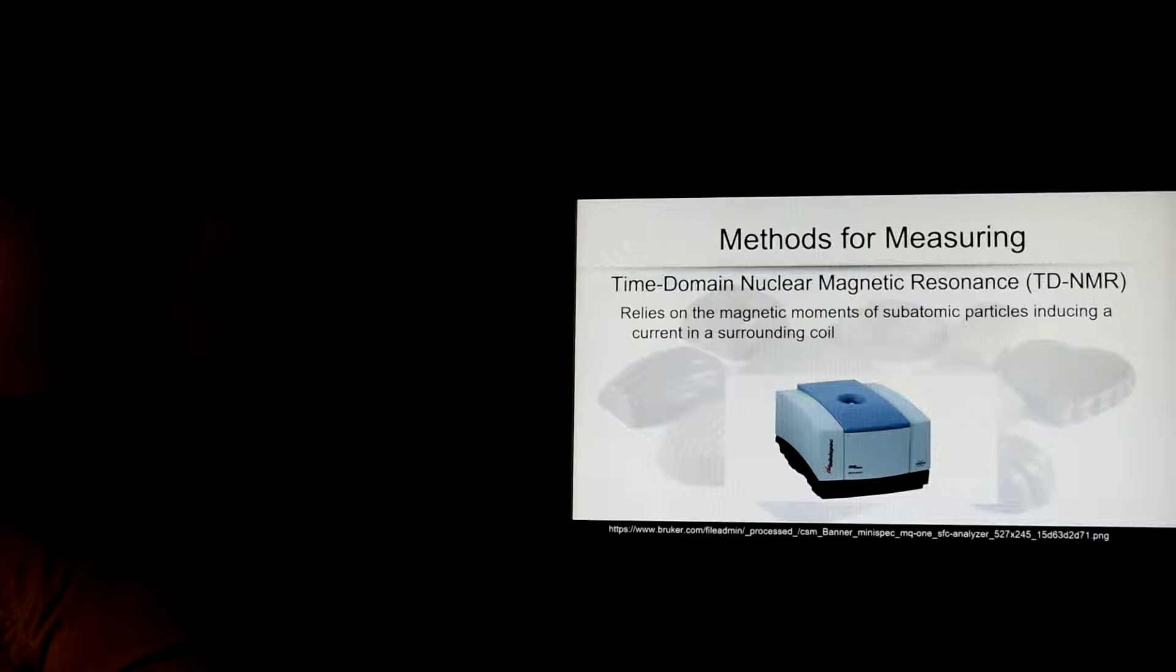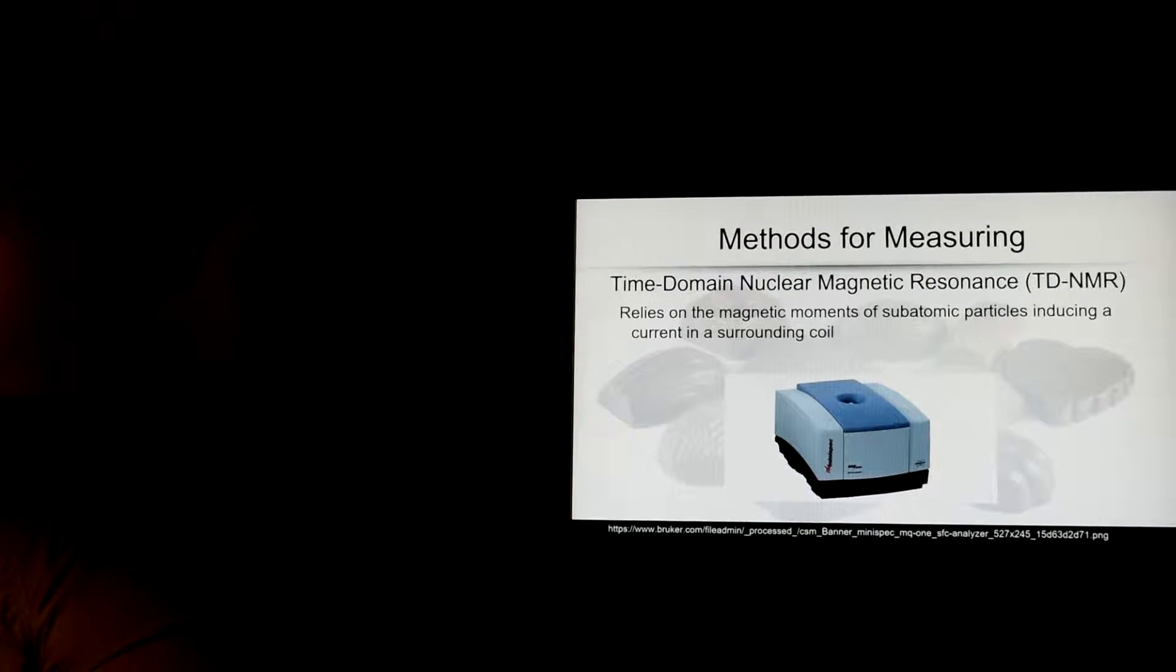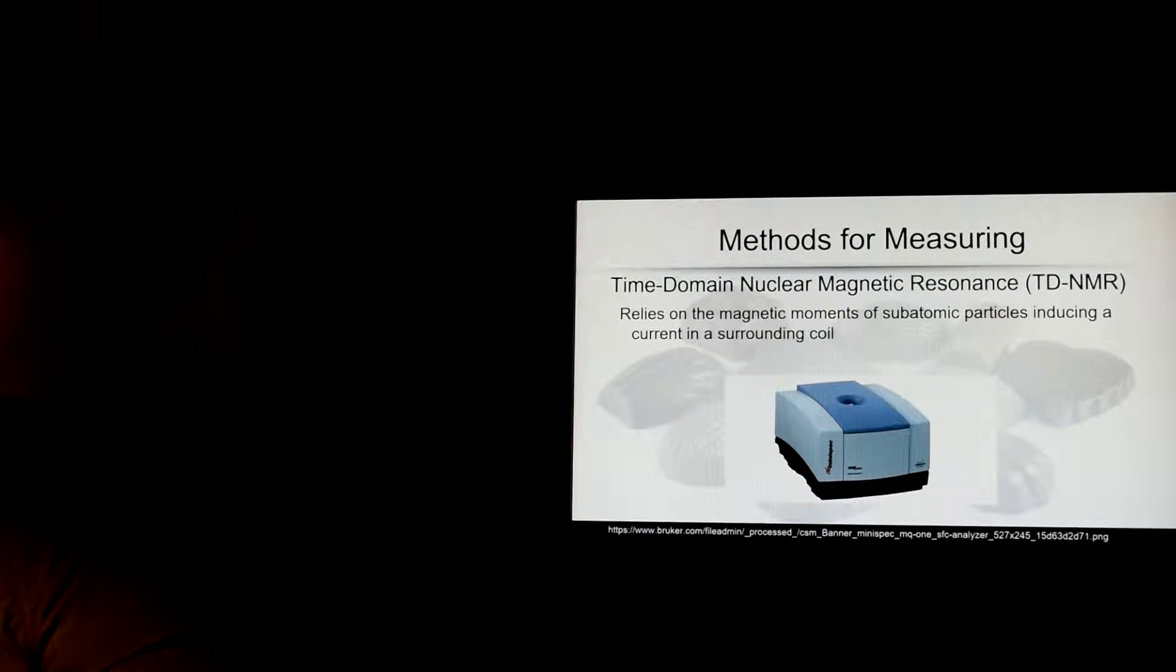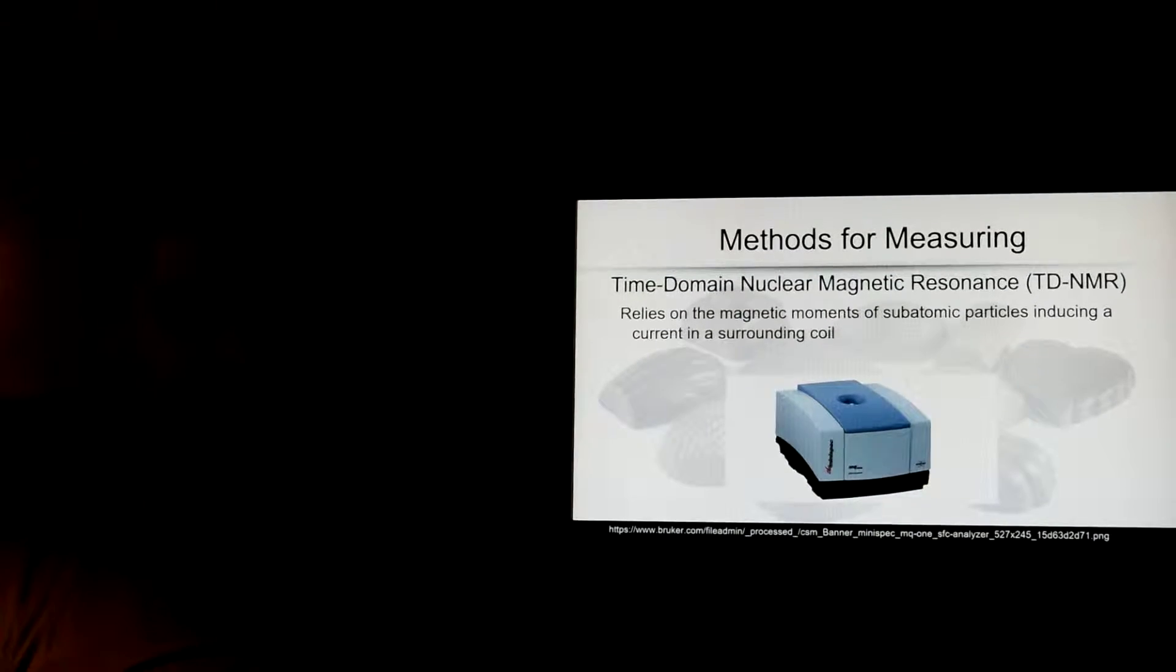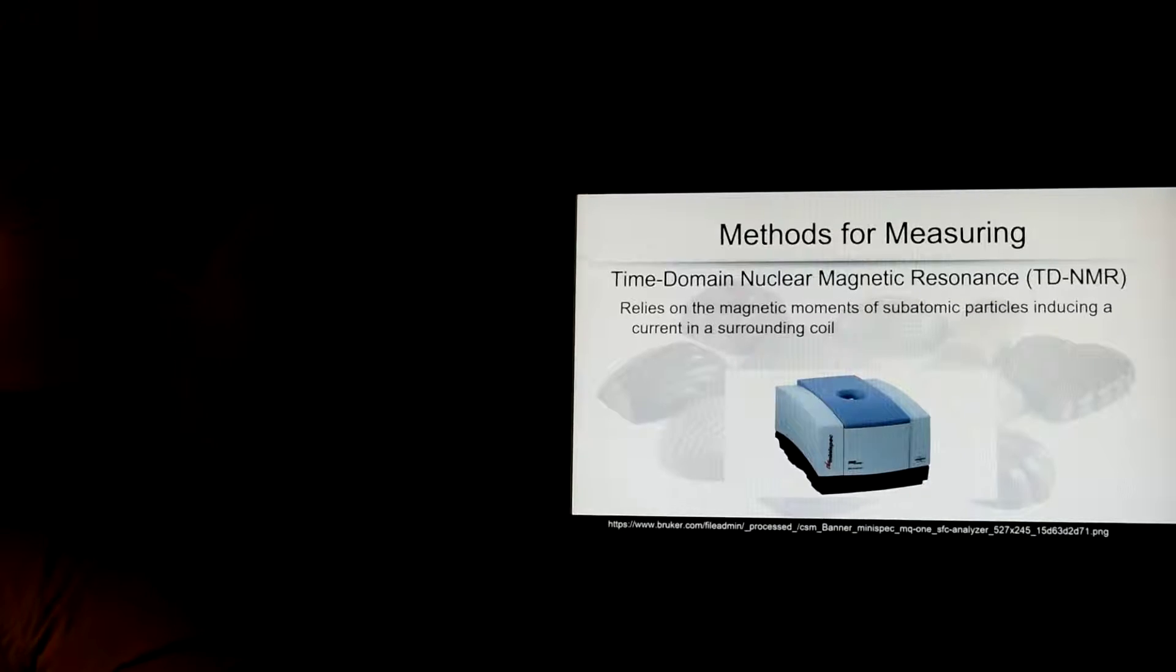A second method is time-domain nuclear magnetic resonance, and that's what I'm going to talk about for the rest of the presentation. It relies on the magnetic moments of subatomic particles inducing a current in the surrounding coil. It sounds complicated, it's actually quite simple, and a lot simpler than a dilatometer in my opinion.